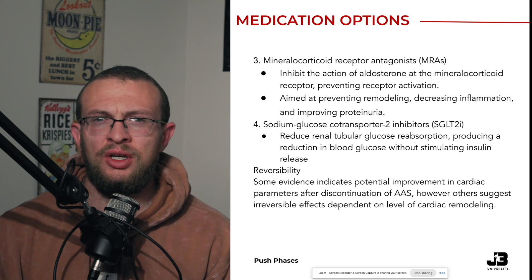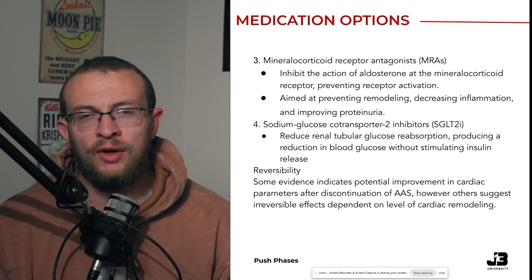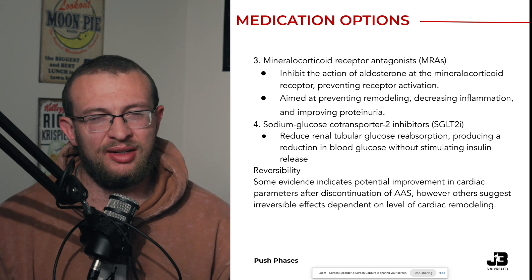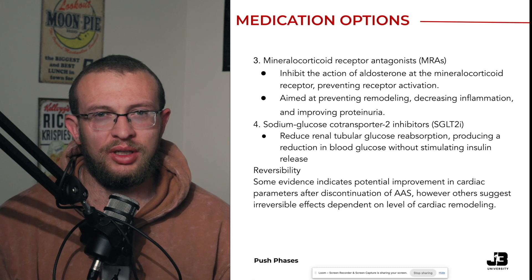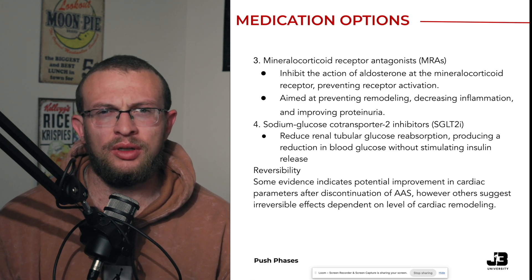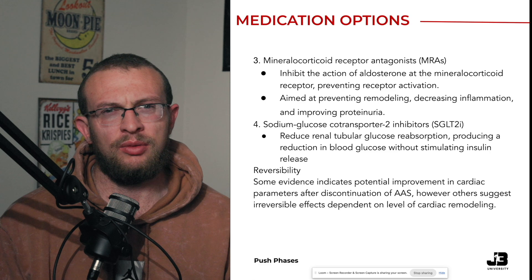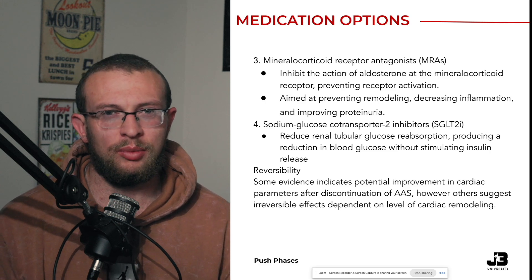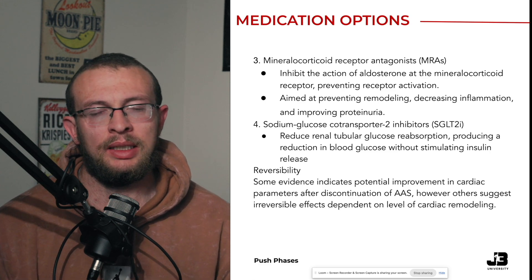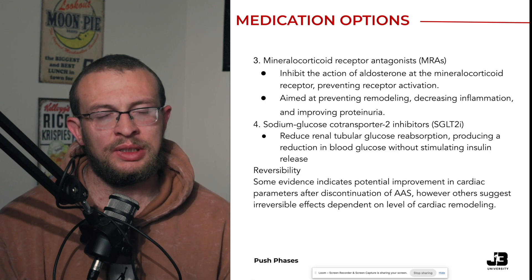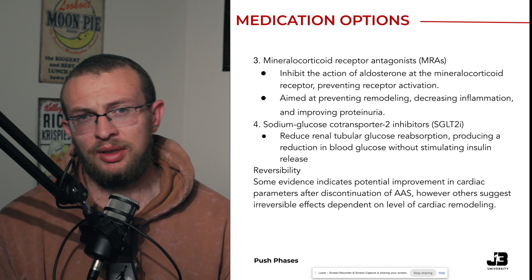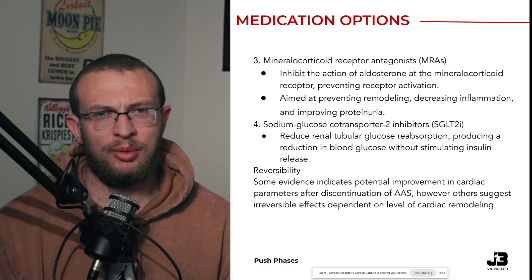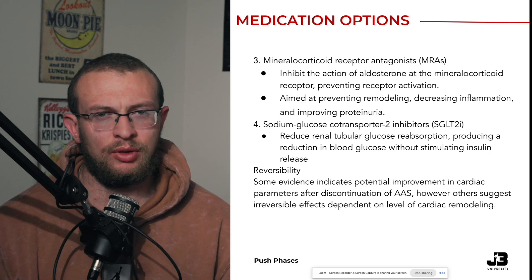The final medication class to consider — probably the least common in its necessity within bodybuilding athletes — is sodium-glucose cotransporter inhibitors, or SGLT2 inhibitors. These work by reducing renal reabsorption of glucose, ultimately lowering blood glucose without a direct effect on insulin. They don't always have application within bodybuilders, but they may be brought up, so it's worth informing yourself about whether they fit your situation and discussing it with your practitioner.